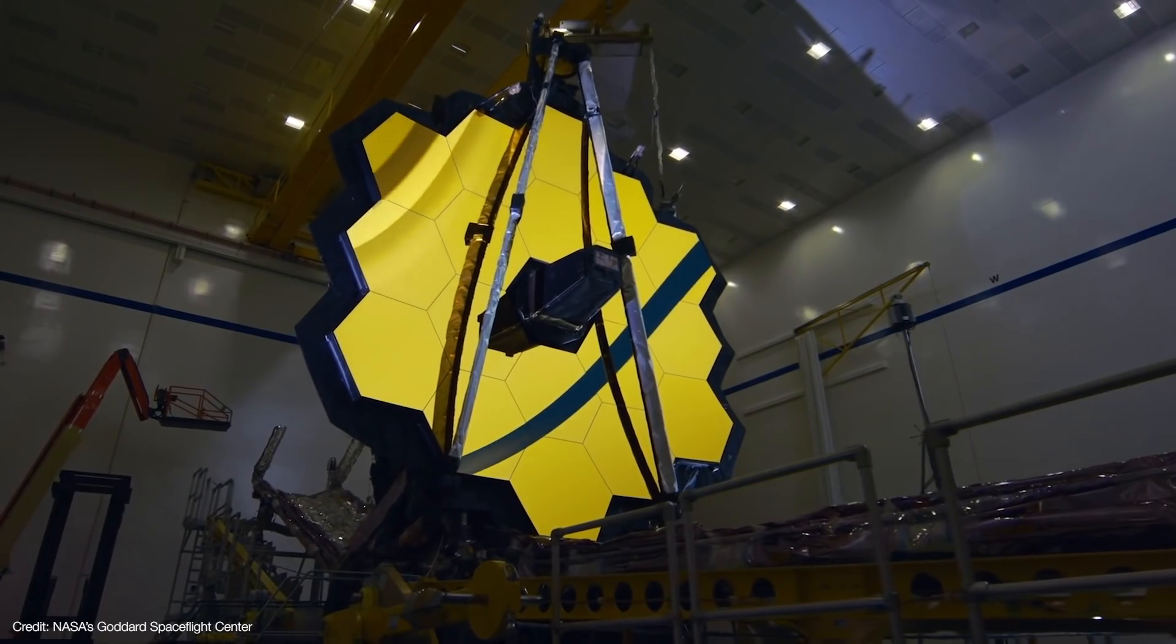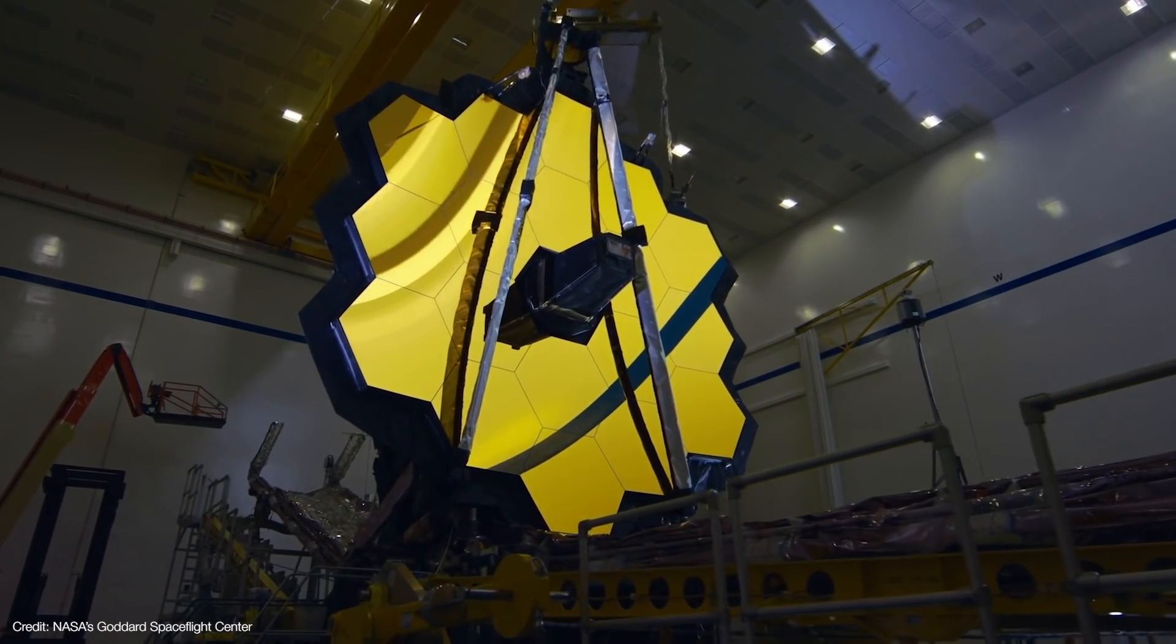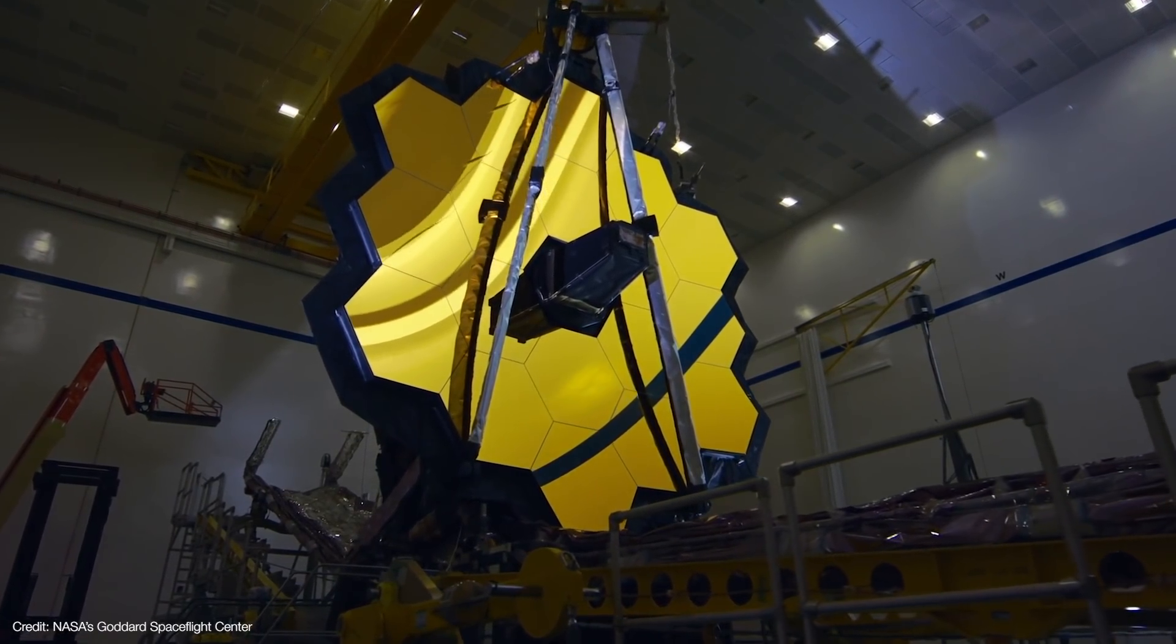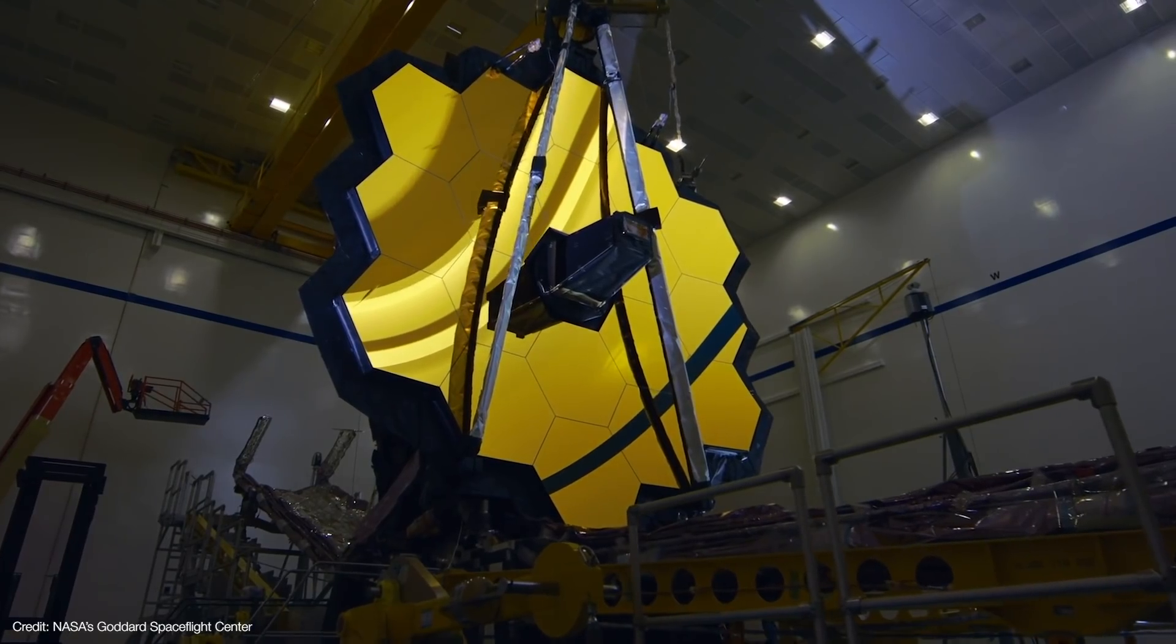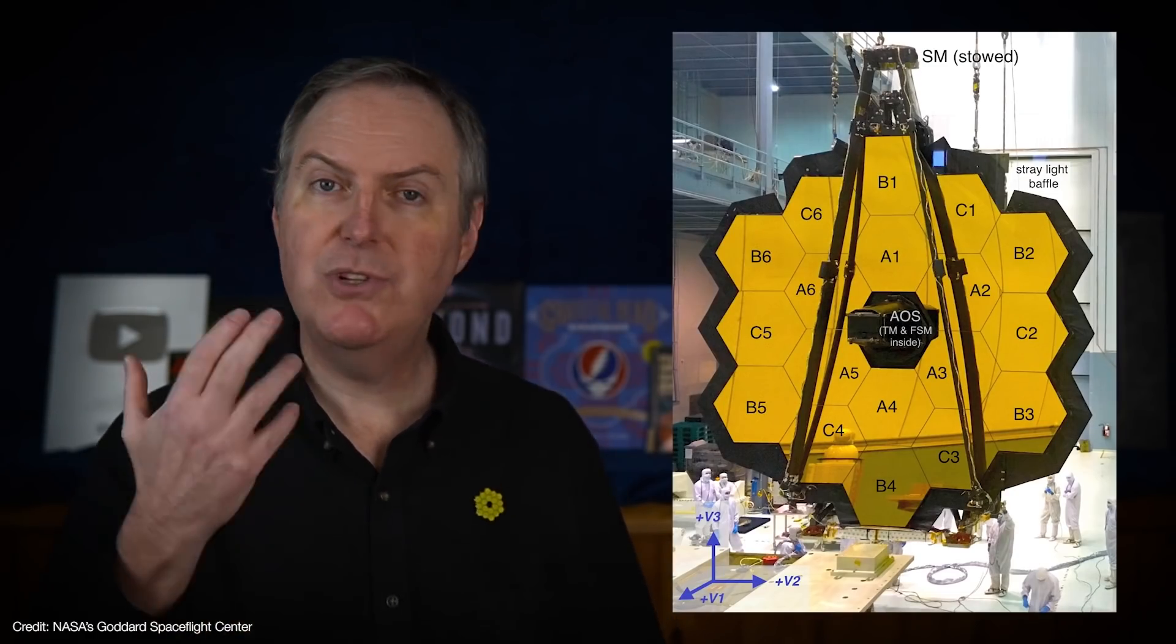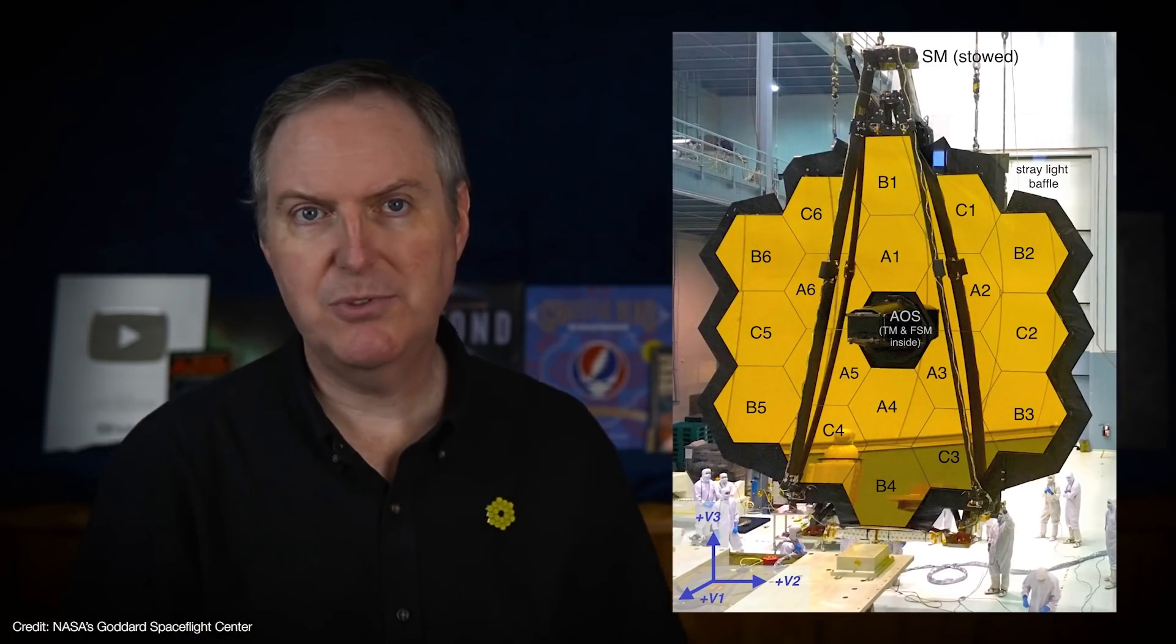Each segment is about 1.4 meters across. Together, they create a 6.6 meter diameter hexagon from tip to tip. And that six-fold symmetry means that each mirror segment only needs to be shaped to just one of three different prescriptions.